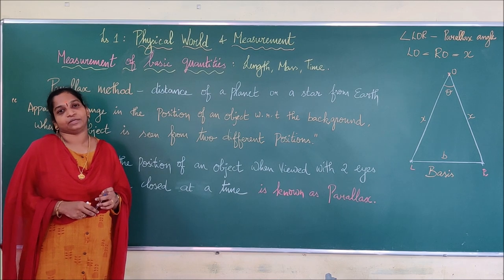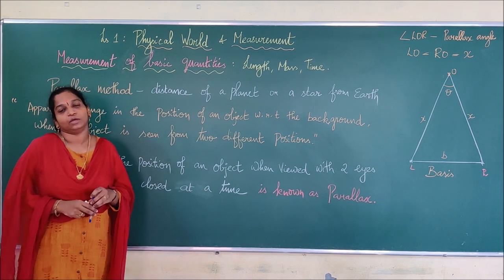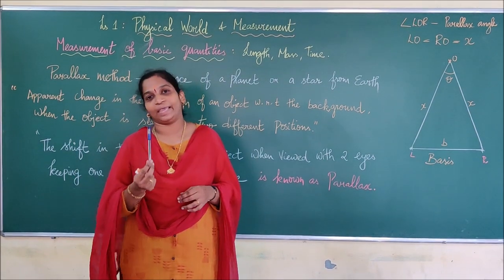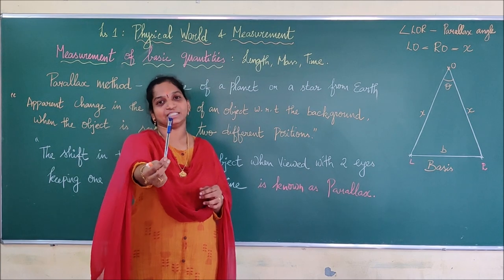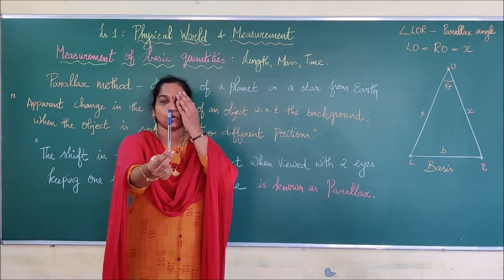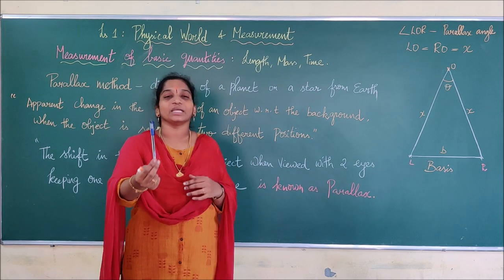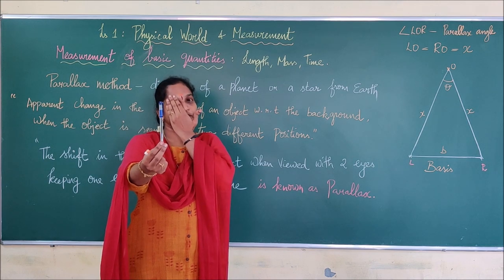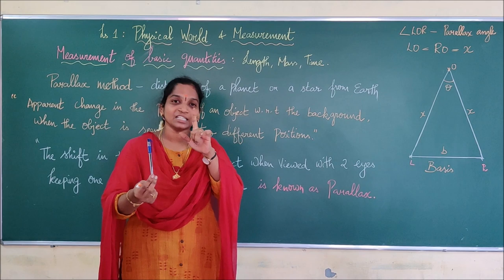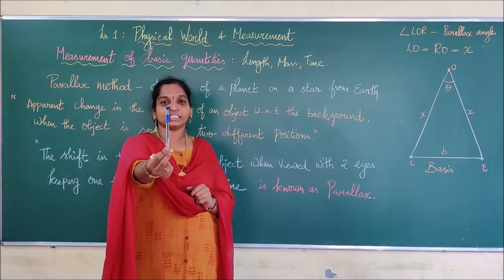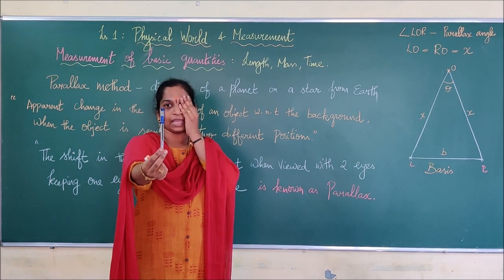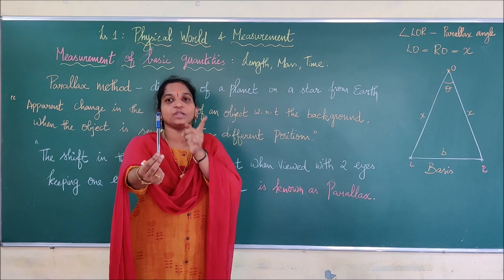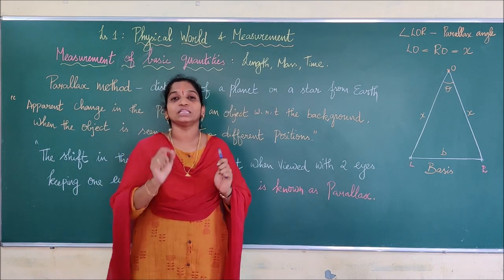Now we are going to see the parallax method to measure large distances. To understand what parallax means, take a pen or pencil, hold it at a small distance in front of you, and observe it by closing one eye at a time. You will see there is a small shift in the position of the pen with respect to the background. We call that shift parallax.